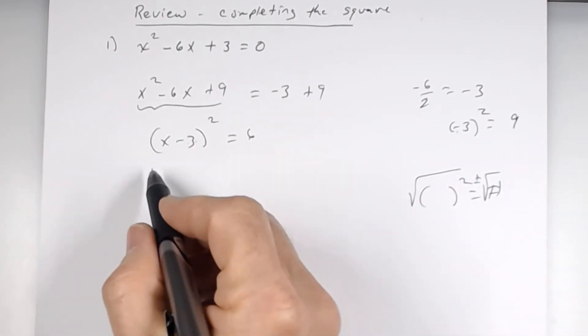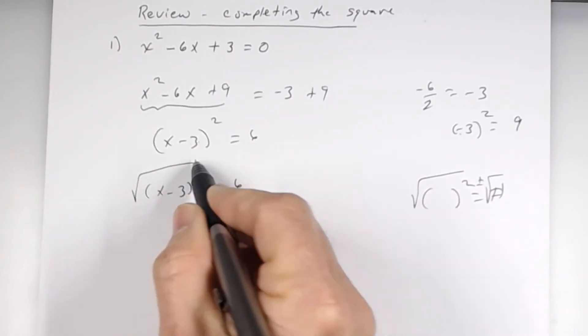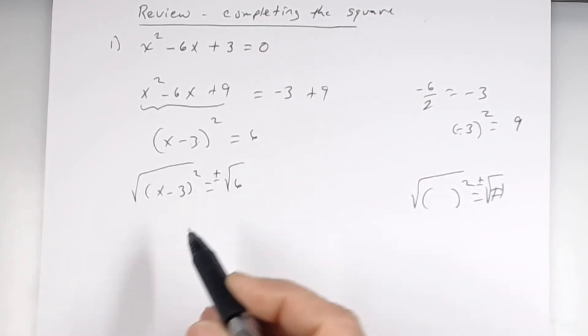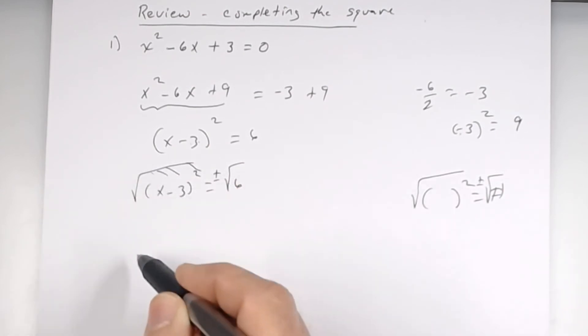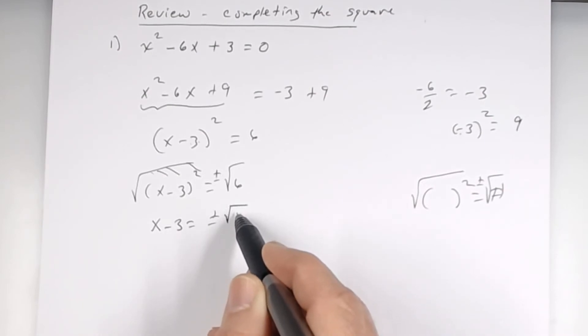So that's in this form. So I'll go ahead and rewrite this over. So you take the square root. Square root. And what do I put here? Plus or minus. So the square and square root are going to do each other? What's left? equals plus or minus square root of 6.